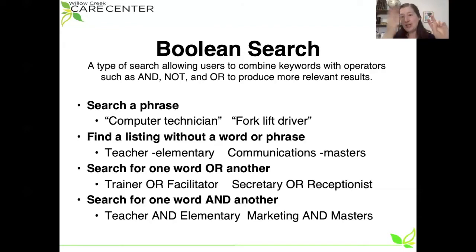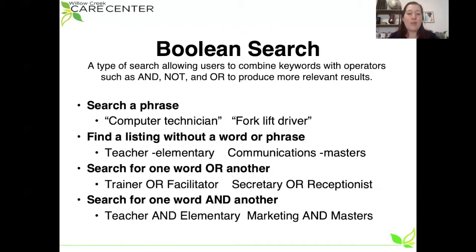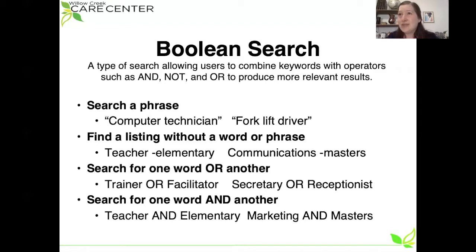If you are searching for computer technician jobs, you can surround that phrase with quotation marks. So you'll type: quotation mark, computer technician, quotation mark. Now when you do your search, the software will understand that you are only interested in results that include that exact phrase. Postings for mechanical technicians or computer programmers aren't going to pop up. You're only going to get results that use the exact phrase 'computer technician.' You can imagine this for kindergarten teacher, forklift driver, food buyer — as long as you put the quotation marks, you will find the exact phrase and your job postings will really line up with what you want.